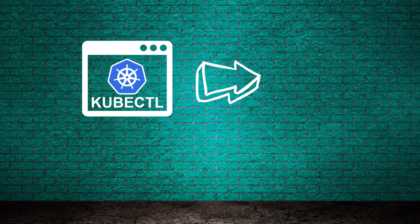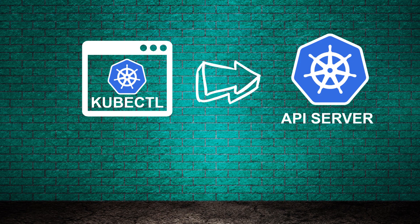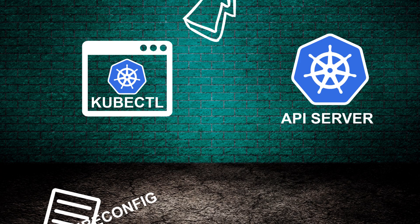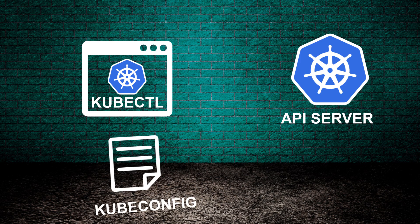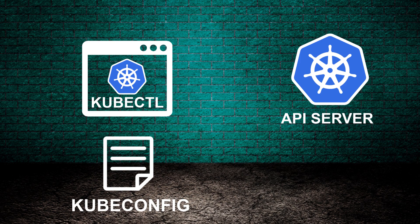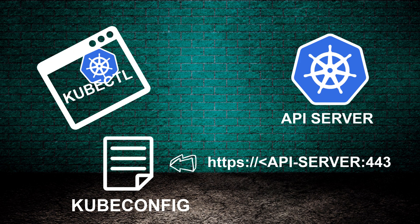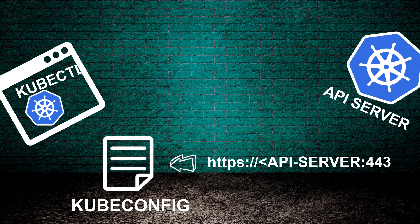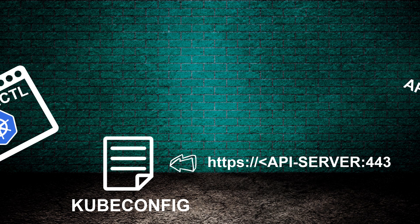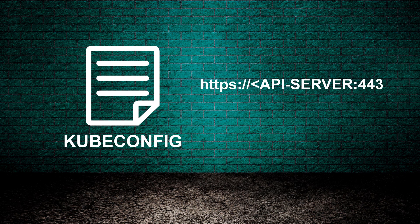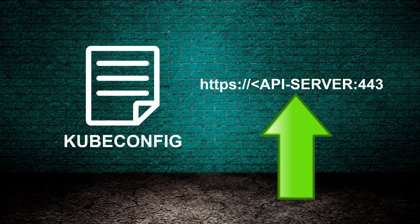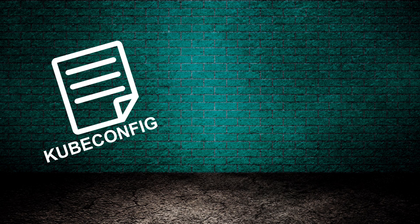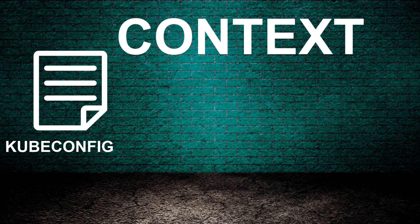kubectl is a command line tool that allows us to talk to the Kubernetes API server. kubectl is configured with a kubeconfig file — the address and authentication details are defined in the kubeconfig. This tells kubectl where the API server is and which cluster we can talk to. In our config we can set a context which points to our dev cluster, UAT cluster, or prod cluster.